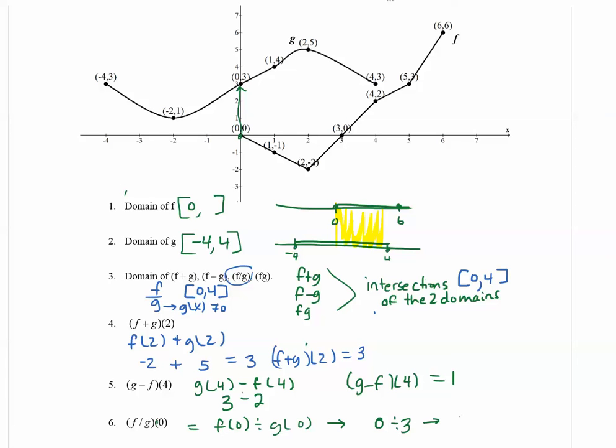And 0 divided by 3 is 0. So f divided by g of 0 is 0.